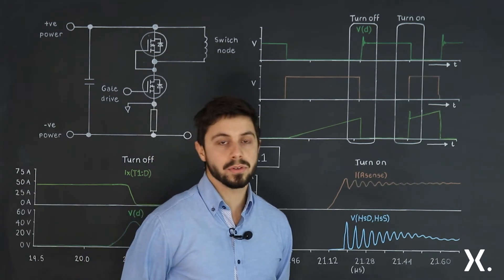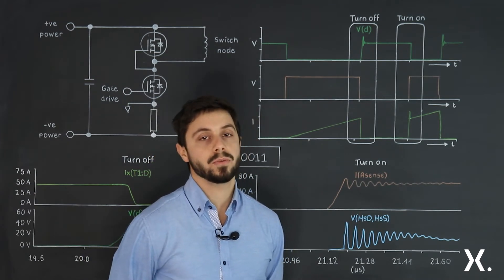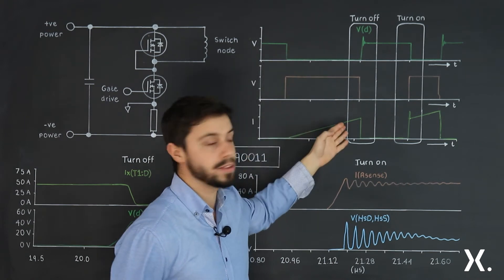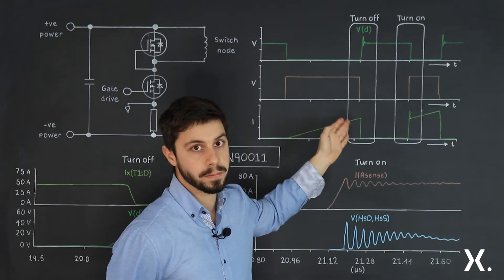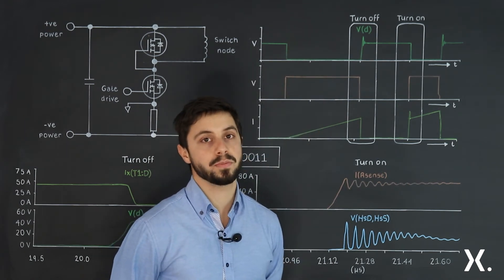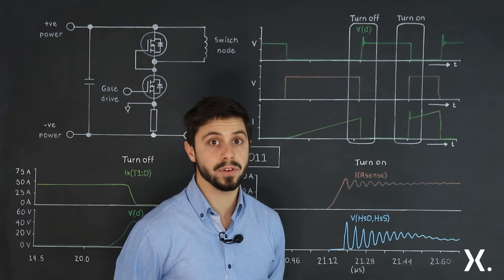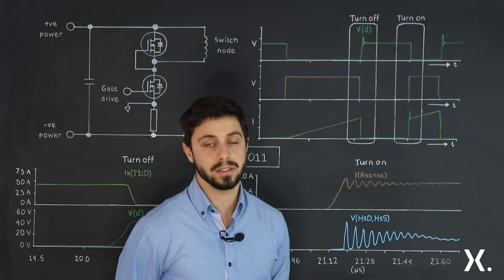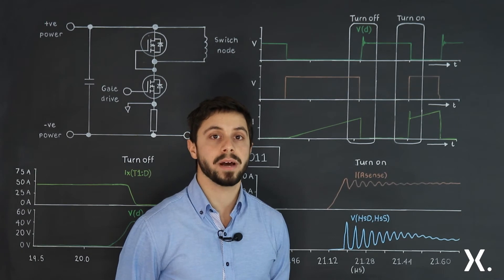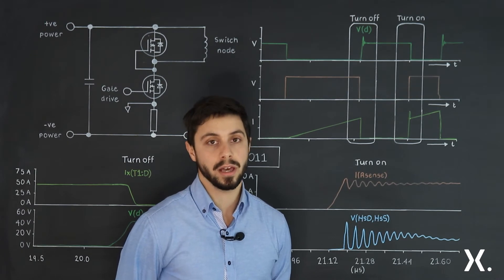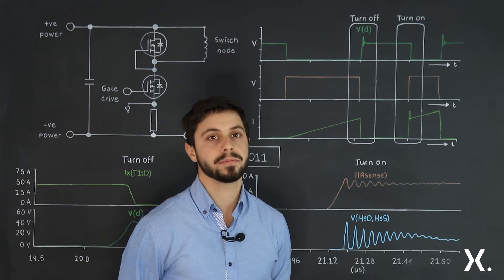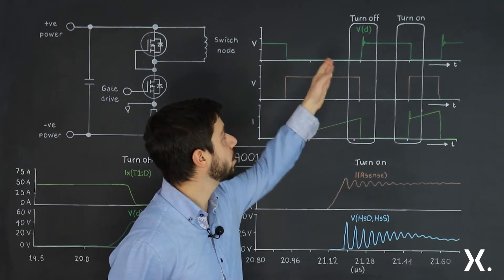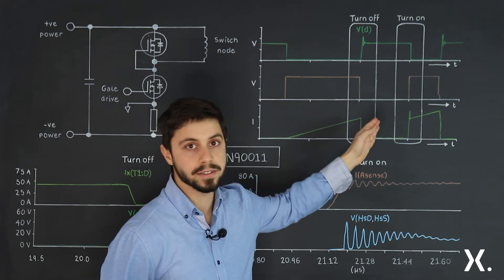Other important waveforms that we should look at are the switch node voltage and the current. Both of them show specific behaviors when having different MOSFETs, different gate resistors and capacitances in the H-bridge configuration. So now let's have a closer look at the turn off and turn on events.